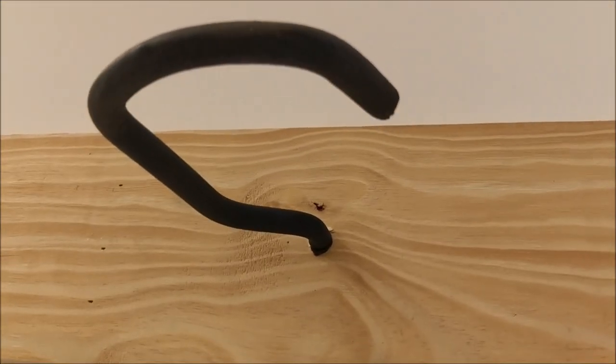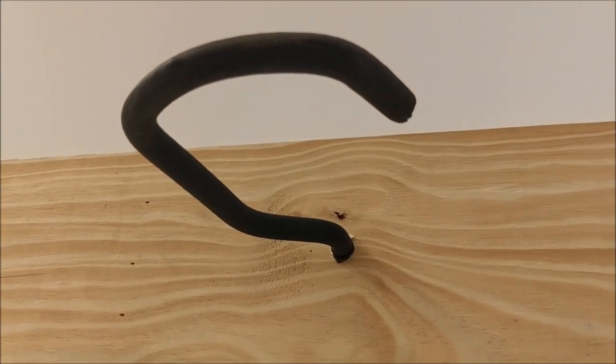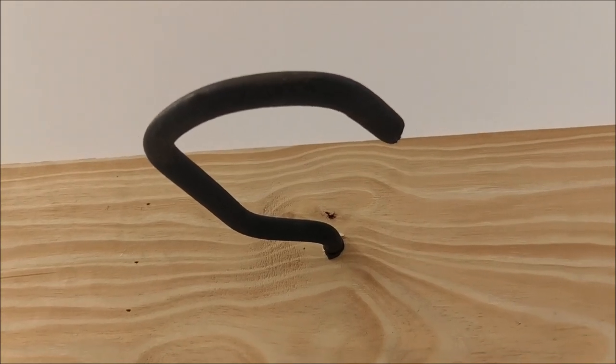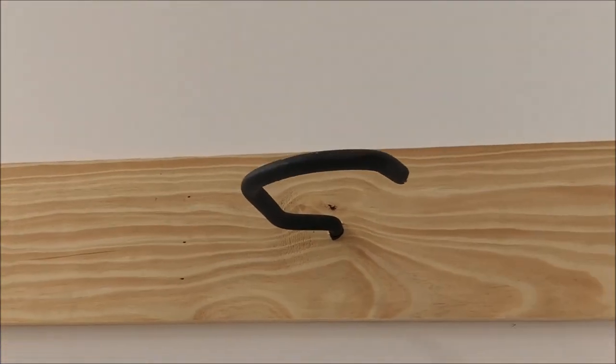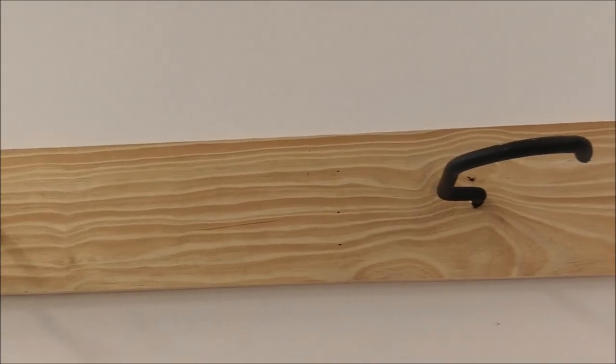Then you get these, you can get these at Walmart or Lowe's or Home Depot or whatever. These hooks for hanging things. You put them both in the same direction, turning to the right. And you got to get the height right.